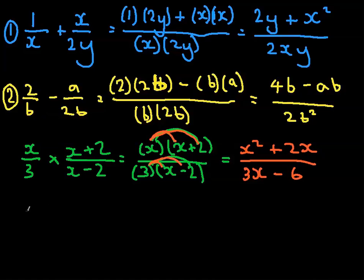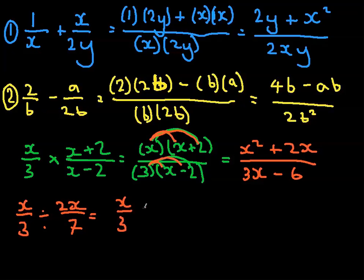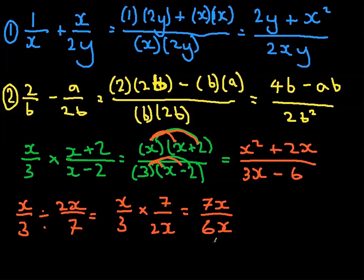And division — let's do a quick division example as well. So x over 3 divided by 2x over 7. Firstly, let's flip the second fraction: x over 3 times by 7 over 2x. Now simple multiplication: x times 7 equals 7x over 3 times 2x equals 6x. We could have cancelled the x's, giving us 7 over 6.